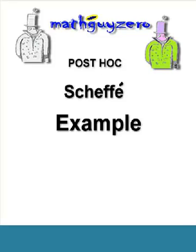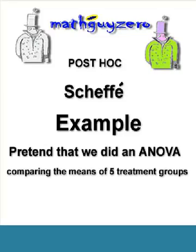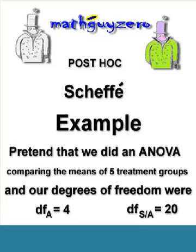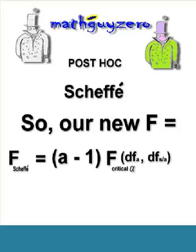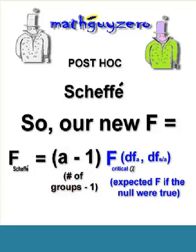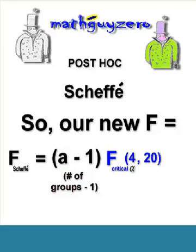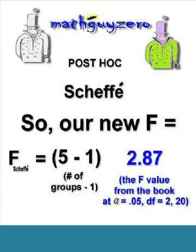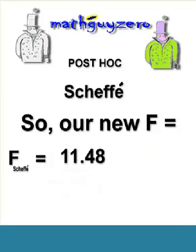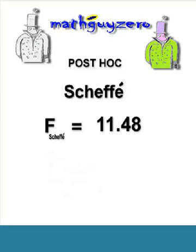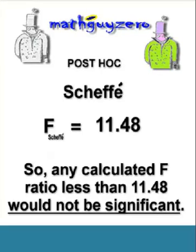Here's an example. Let's say we ran an ANOVA comparing the means of five different treatment groups. Our degrees of freedom are 4 between group and 20 within group. Our new F is going to be the number of groups minus 1 times the critical F from our ANOVA. We had five groups, so A minus 1 would be 5 minus 1, and our critical F from the table would be 2.87. So we multiply 4 times 2.87, and that new product of 11.48 is our critical F. Only those F ratios greater than 11.48 would be considered significant.